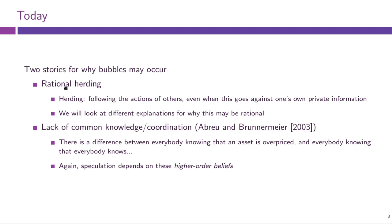We will look at a class of models called herding models, which tell us that sometimes agents can ignore their private information and just trade based on the public information available, meaning everyone does the very same thing — nobody listens to their private signal. That generates herding, which is the idea behind bubbles. Then we will look at another model due to Abreu and Brunnermeier, which also features a lack of aggregation of private information and involves higher order beliefs.